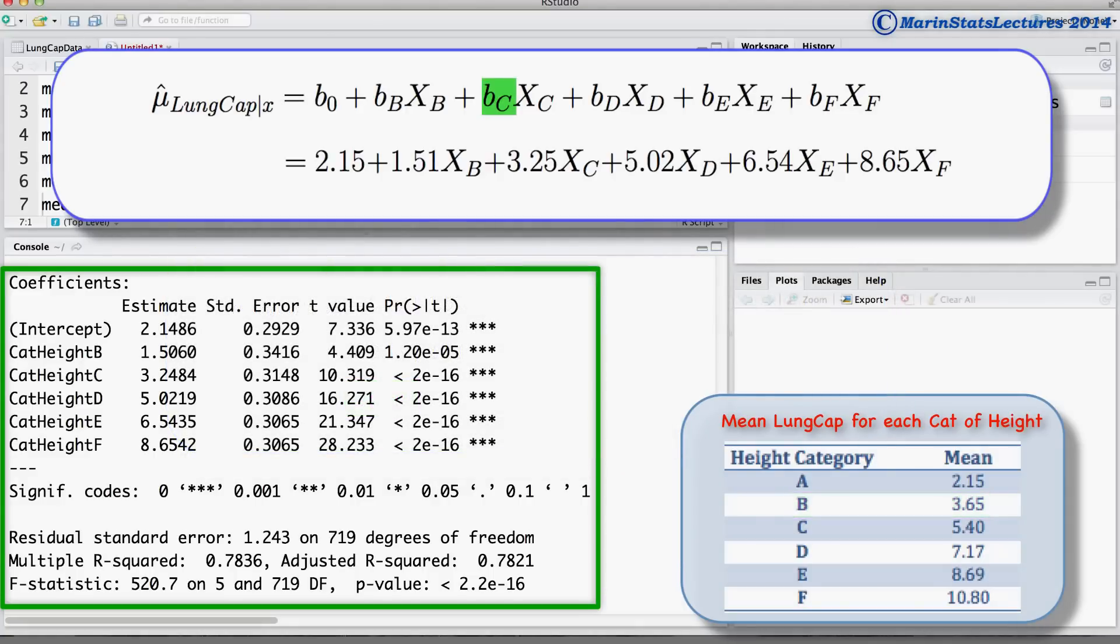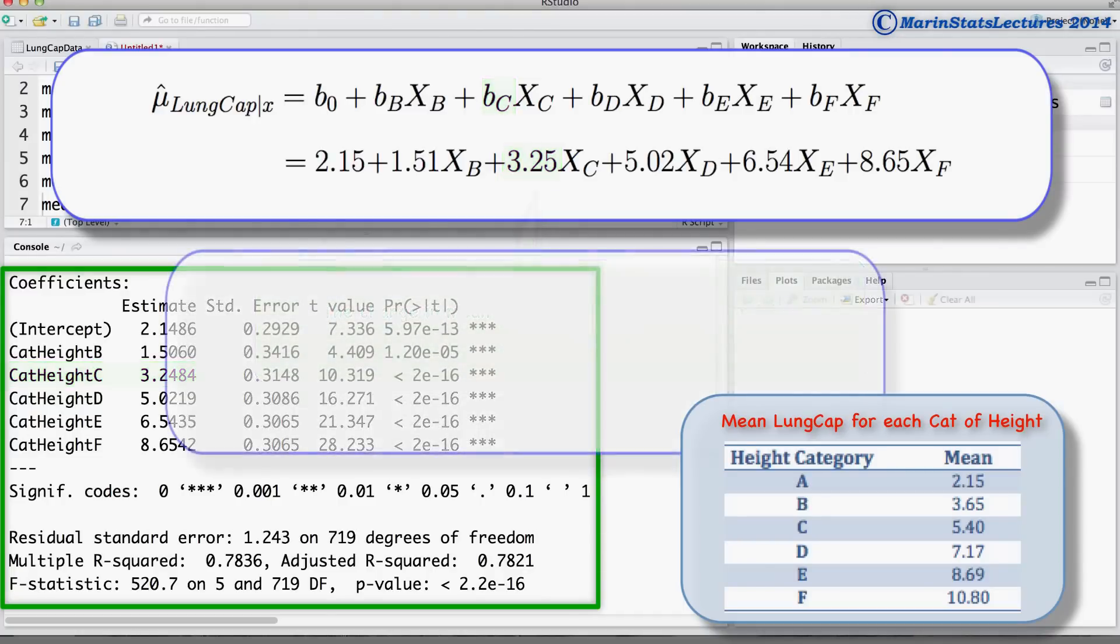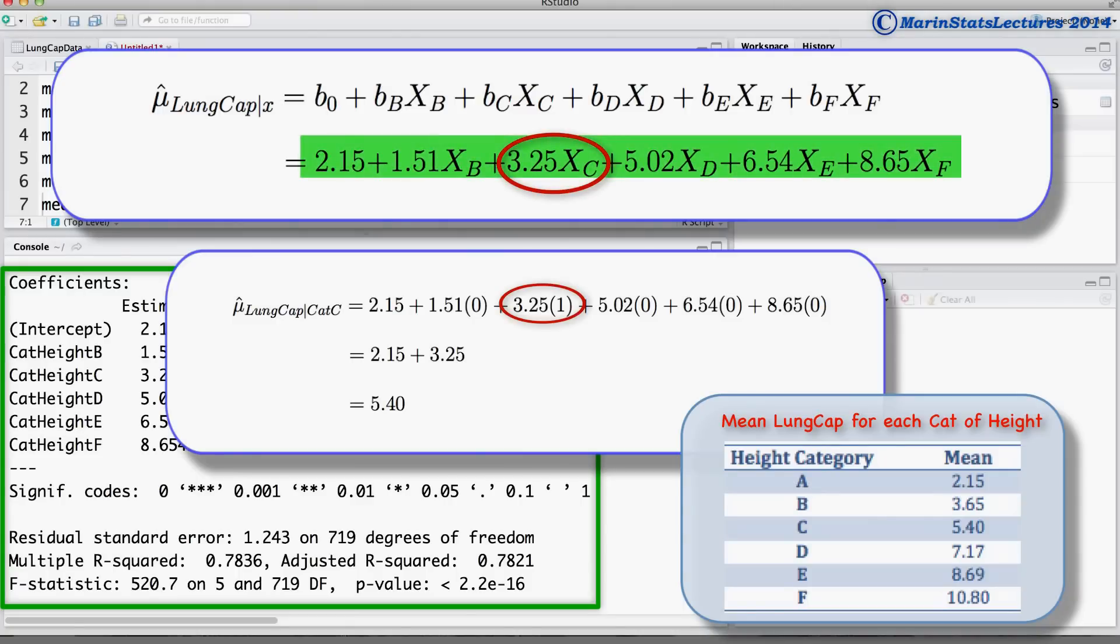The coefficient for category C of 3.25 is the change in mean lung capacity we would expect for someone in category C relative to someone in category A. For someone in category C, the xC indicator will equal 1, all other indicators will equal 0. In this case, their estimated mean lung capacity will be 2.15 plus 3.25, which equals 5.4.